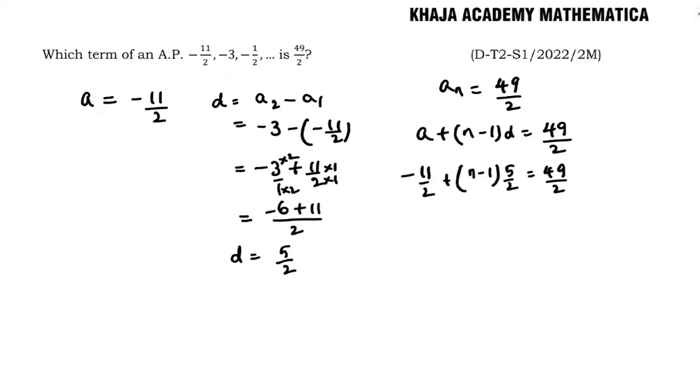In LHS we take LCM 2. Minus 11 plus 5n minus 5 equals 49 by 2. Cancel the 2s. 5 times n minus 16 equals 49.